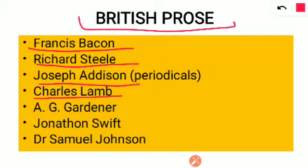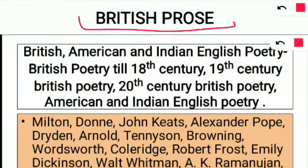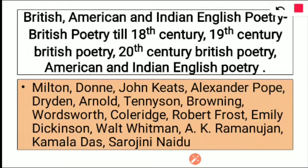Then Charles Lamb — Dream Children, his connection to South Sea House — all of this you have to prepare, along with dates of birth and death. Also prepare A.G. Gardiner, Jonathan Swift, and Dr. Samuel Johnson — how many times they were published and other details. These are all important prose writers in the syllabus that you have to prepare.